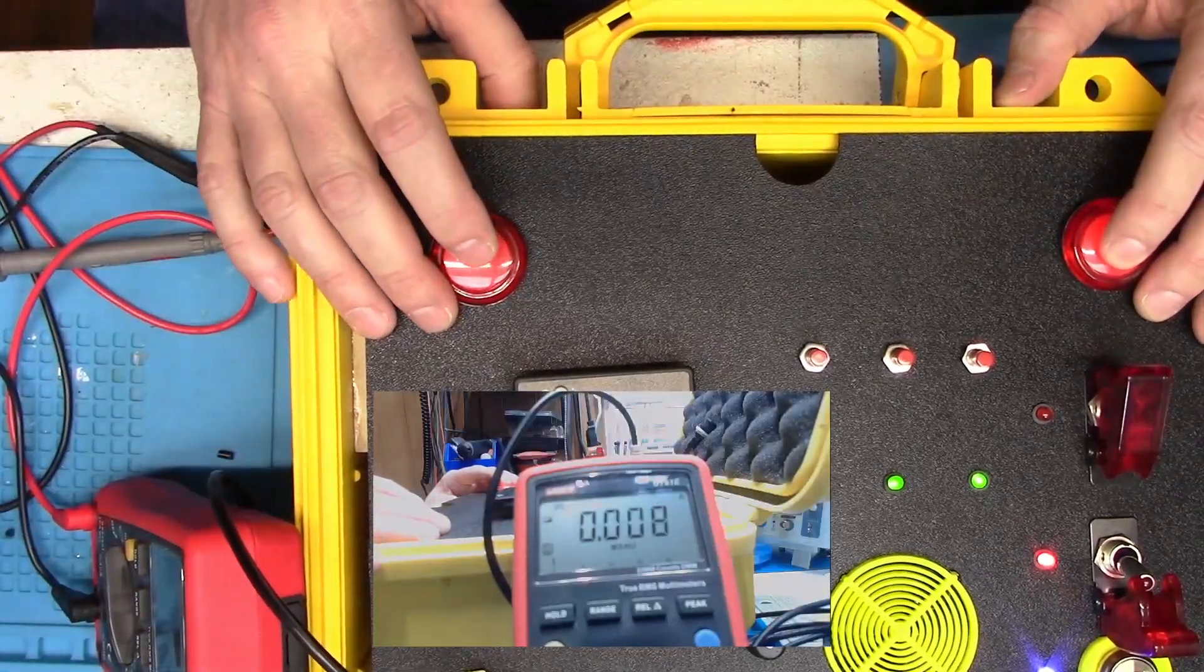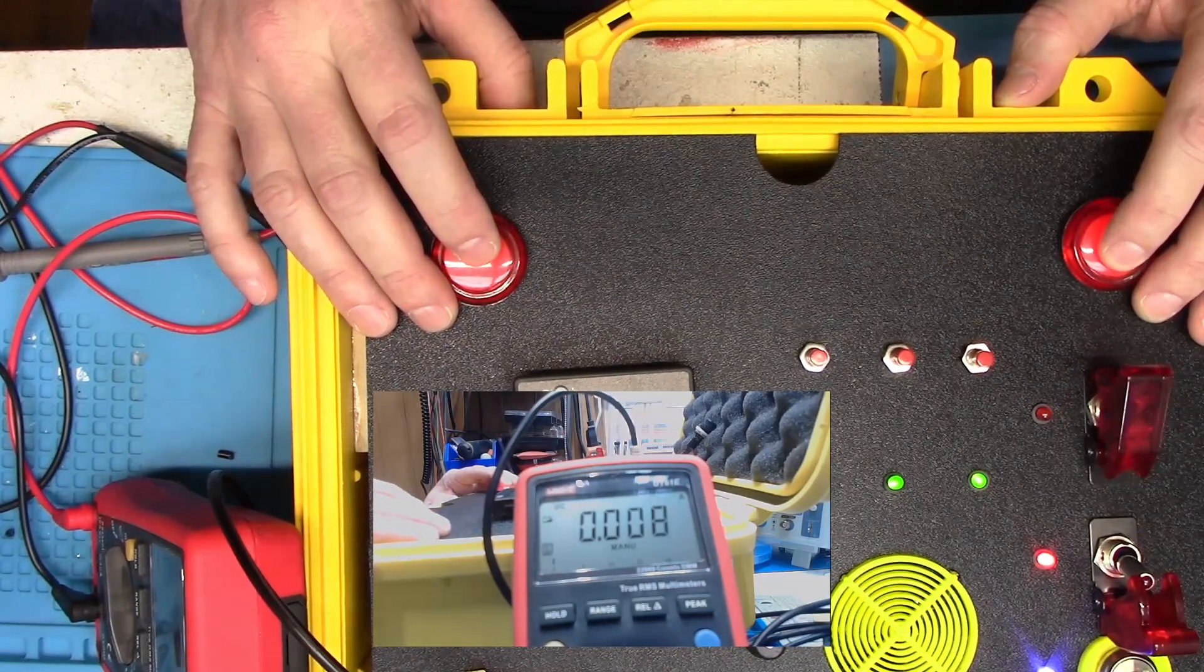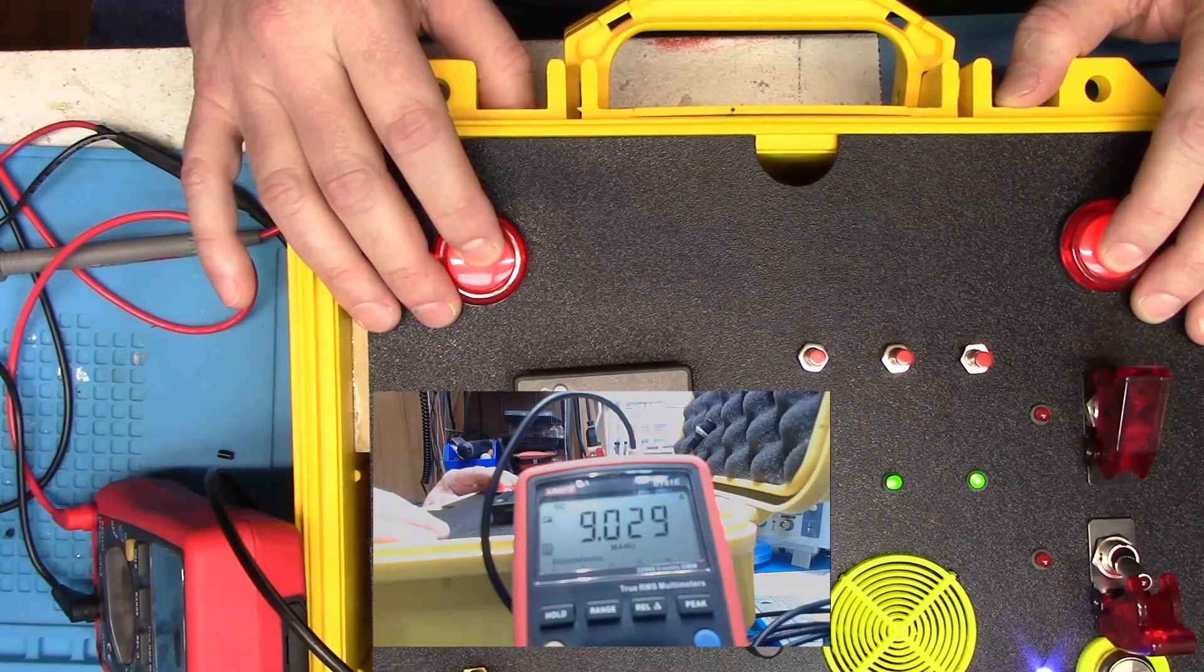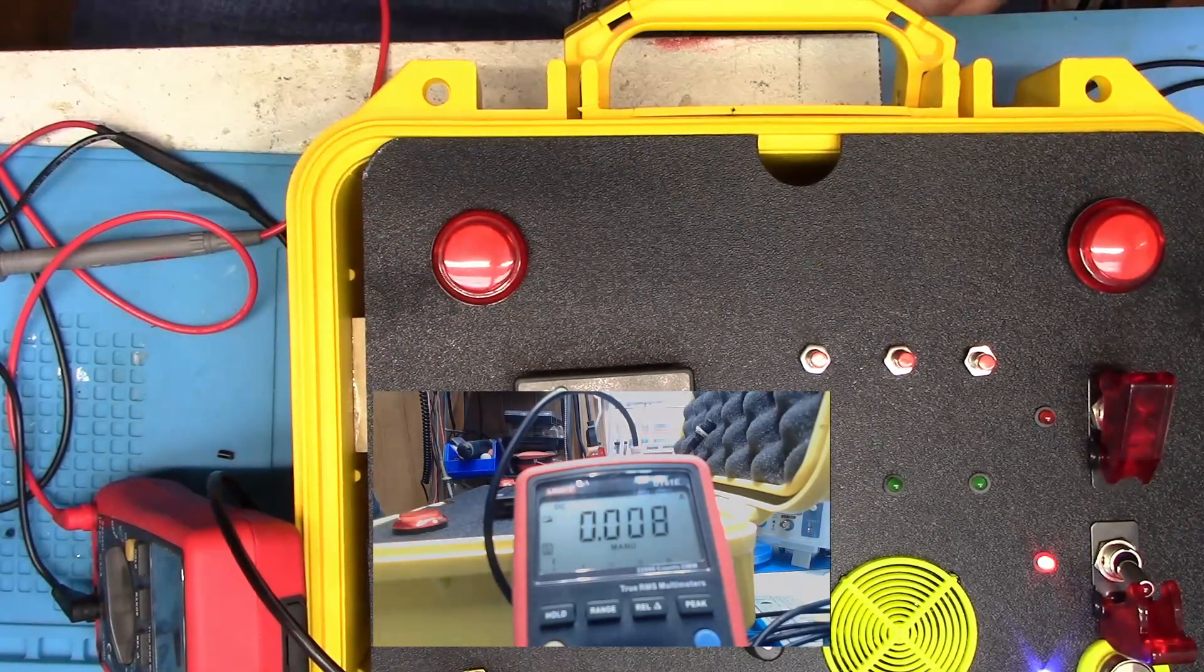Let's make sure we've got the camera on the amp meter. Launch control, this is Houston. We are going for launch. Okay, here we go. And we have launch. Looks like we got about nine amps out of it that time.